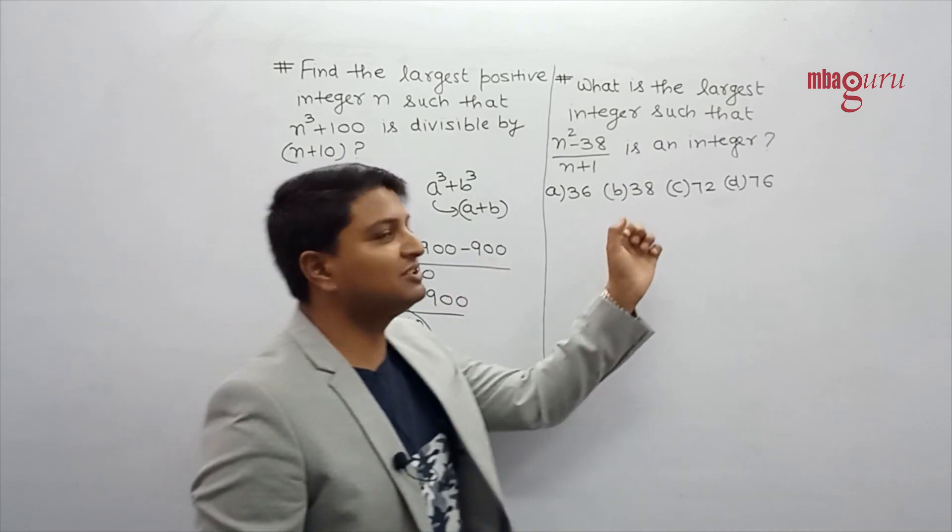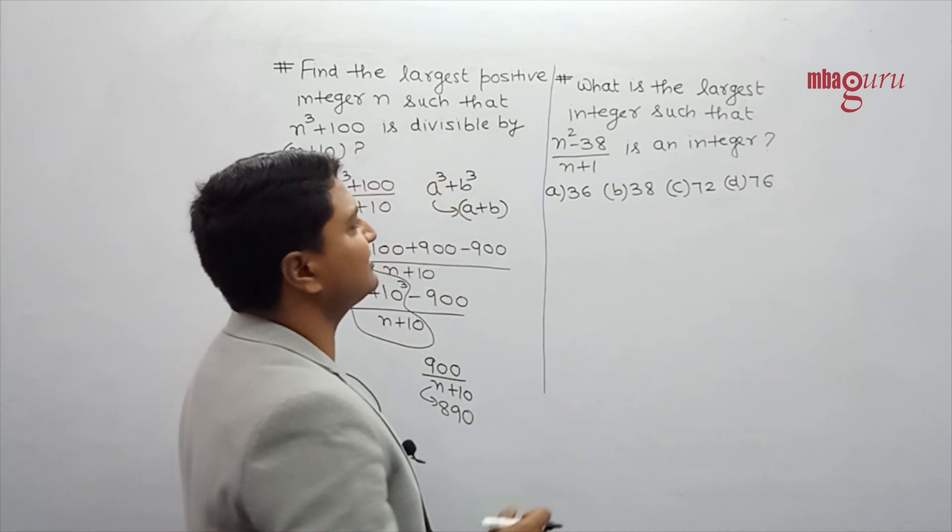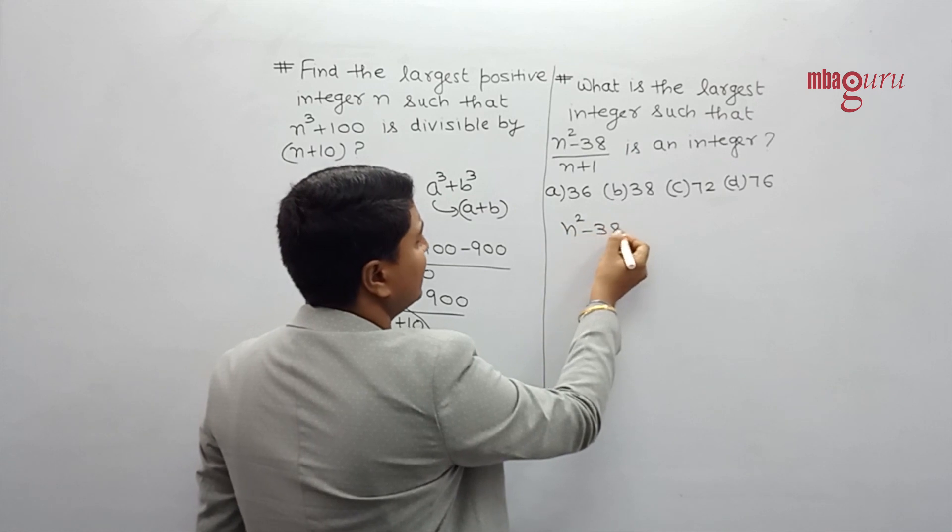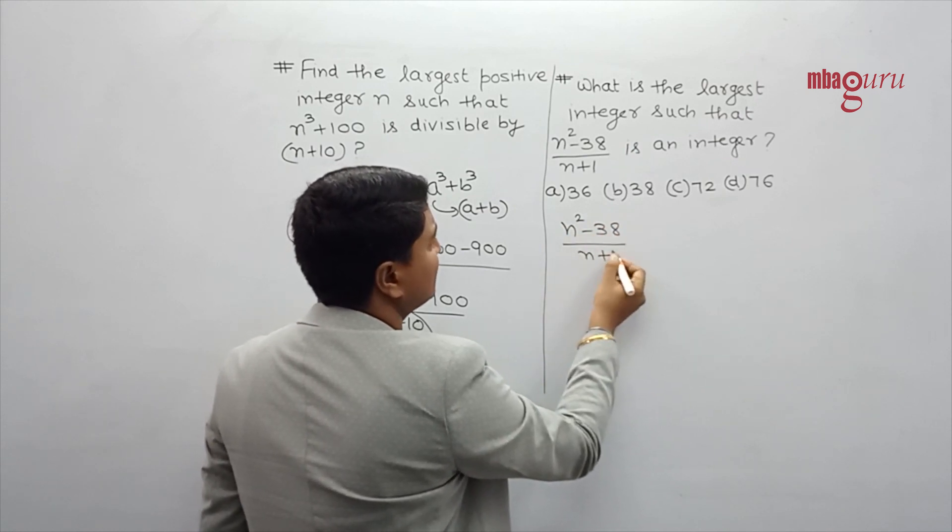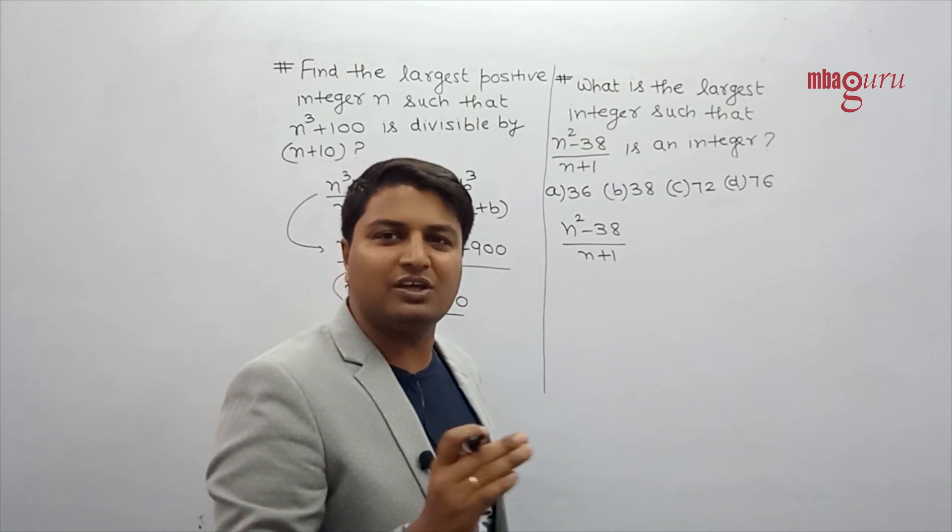Once again, we will understand this question. See here. What is the largest integer such that n square minus 38 divided by n plus 1 is also an integer. So if you look at this, it is n square.